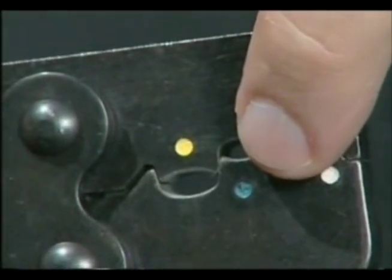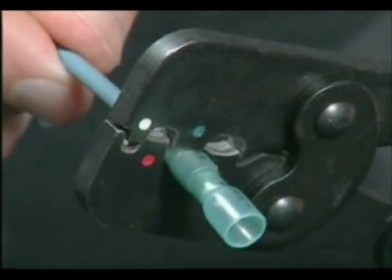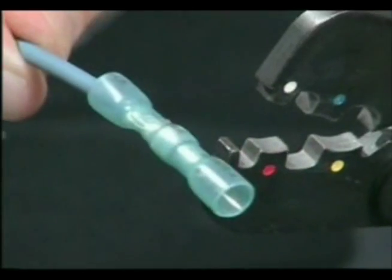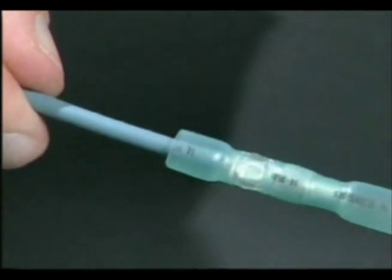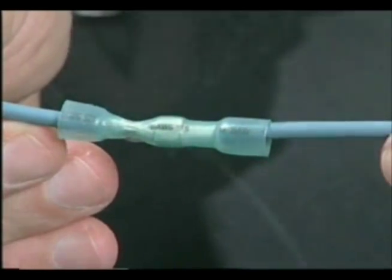Use the proper crimp die and crimp the connector. The connector must be crimped before heating and soldering. Repeat this process for the other side of the connector.